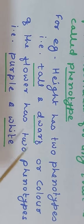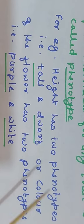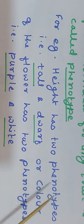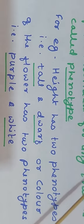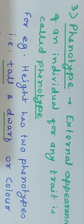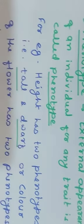The external appearance of an individual for any trait is called phenotype. For example, height has two phenotypes — tall and dwarf — and color of the flower has two phenotypes: purple and white. So phenotype means external appearance of an individual for any trait.